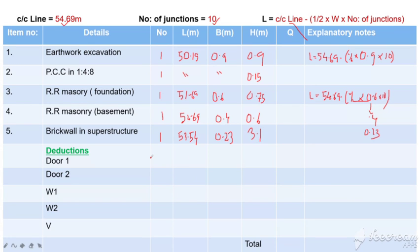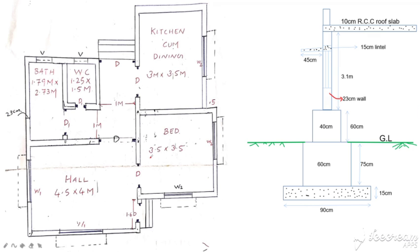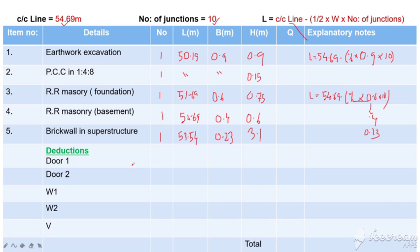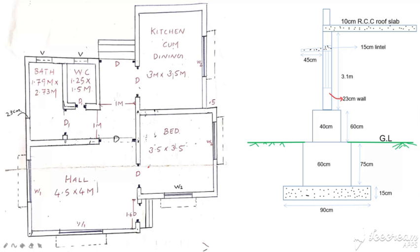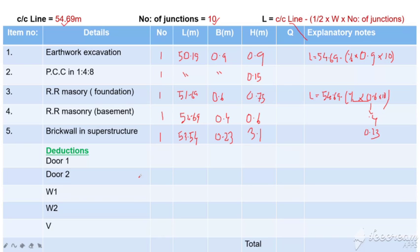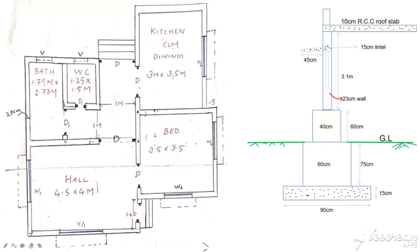Let's get the height of the brickwork. If you look at the super stretcher — we call it D and D1. The first type is Door 1, that is D. How many numbers do we have? D is 1, 2, 3, 4, and 5.